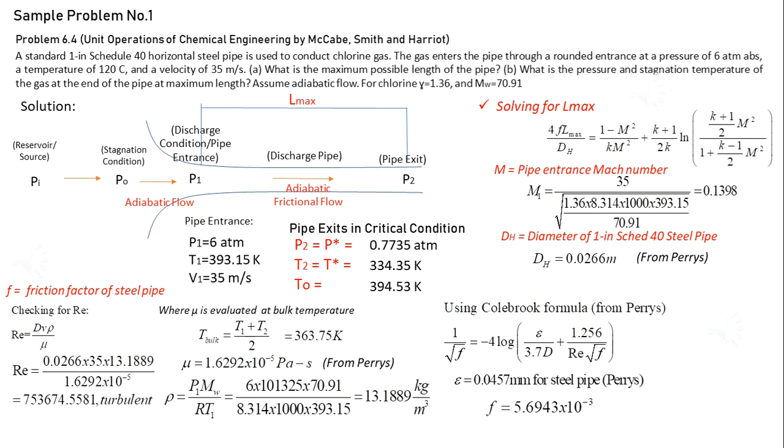Using the Colebrook formula from Perry's Chemical Engineering Handbook, we have f equals 5.6943 times 10 to the negative 3. And substitution of all the variables into the equation of Lmax, we now have Lmax equals to 39.5518 meters.